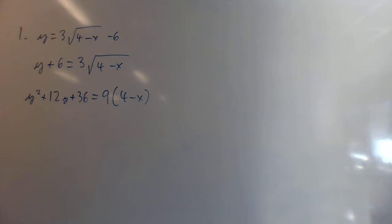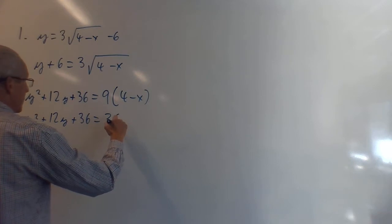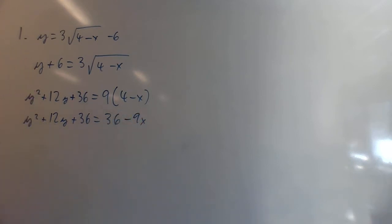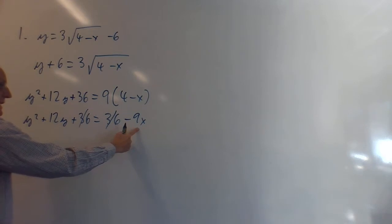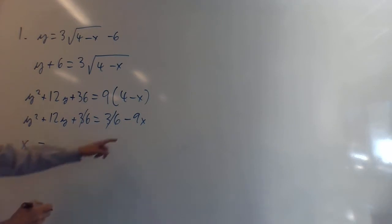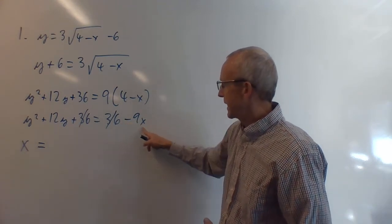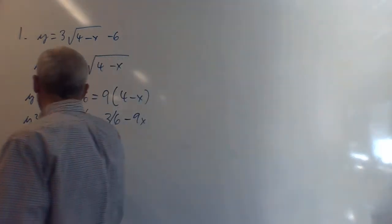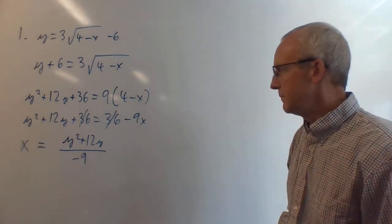We want to solve for x. Rewriting: y² + 12y + 36 = 36 - 9x. That's nice — the 36 cancels on both sides. We subtract 36 from both sides and divide both sides by negative 9. Putting x on the left, we get x = (y² + 12y) / (-9).